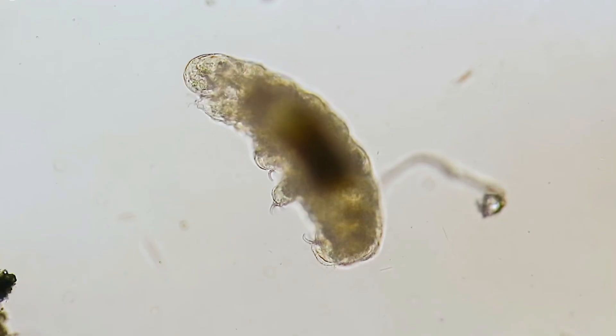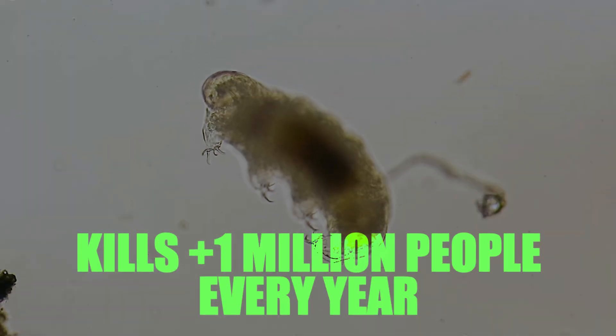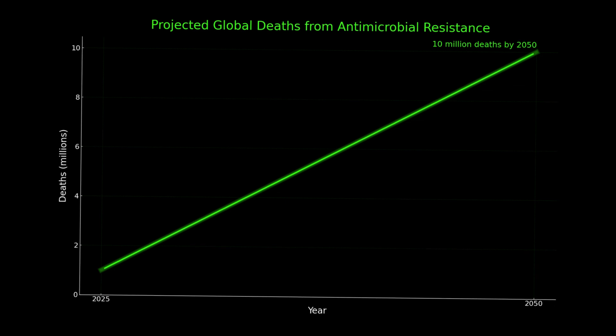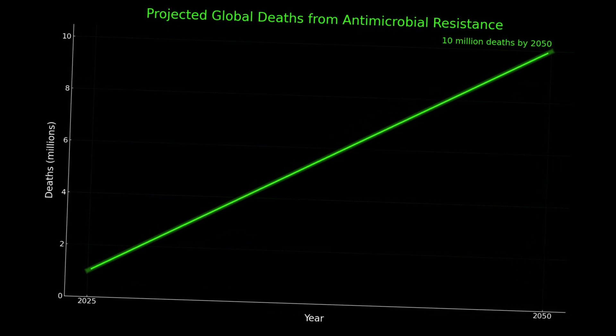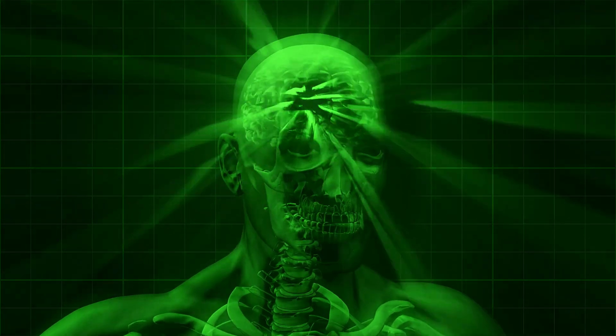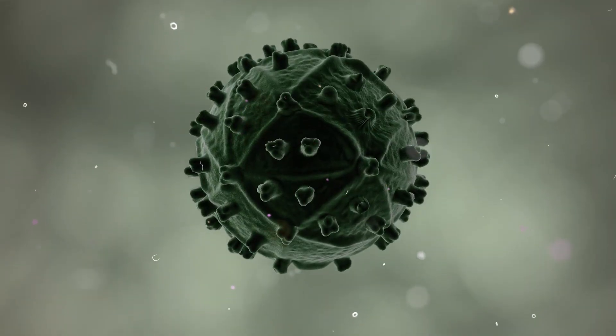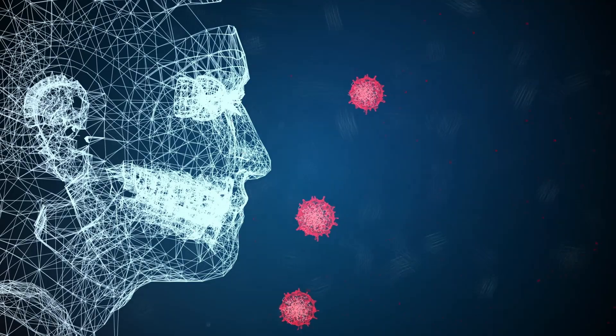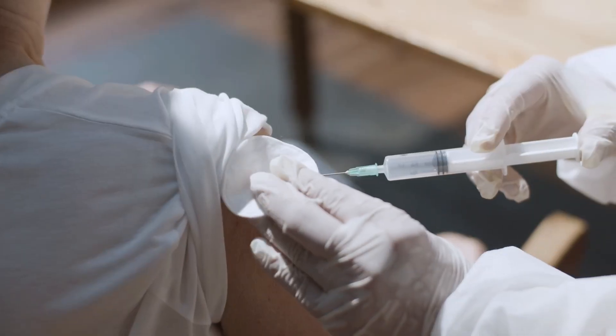Today, antimicrobial resistance kills more than a million people every year. That number is expected to hit 10 million by 2050. Changes that once took hundreds of years can now happen inside one person. HIV can become resistant to medicine during treatment. The flu changes so fast that we need a new vaccine every year.